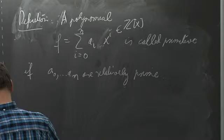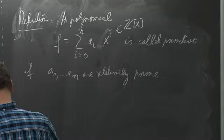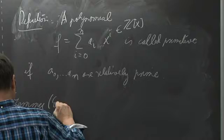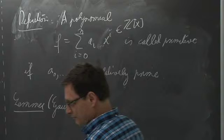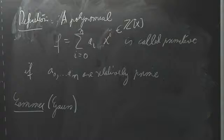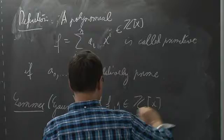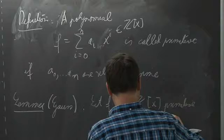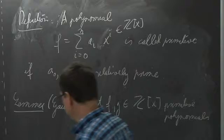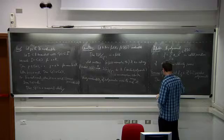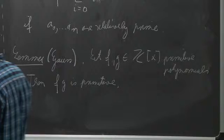The first lemma of Gauss: if you have two primitive polynomials, their product is also primitive. Let f and g be two polynomials with integer coefficients which are primitive. Then f times g is also primitive.